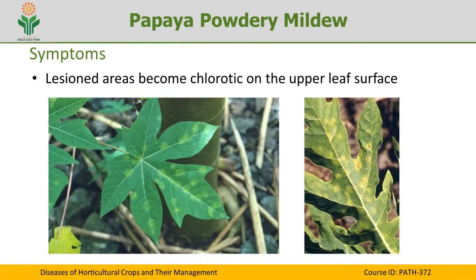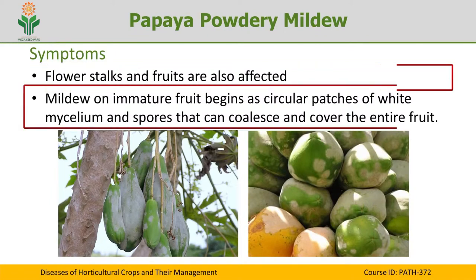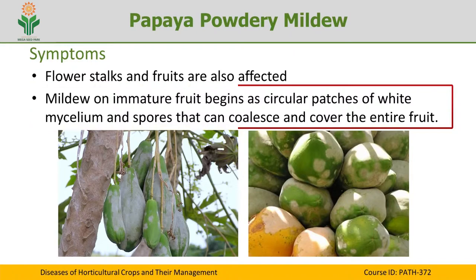As the powdery growth increases it leads to necrosis of the leaf and thereby premature defoliation. Powdery growth can also be seen on flower stalks and fruits. On unripe fruits, the symptom appears as round or circular powdery growth initially on immature fruits, and gradually under high humid conditions these powdery lesions grow over the entire surface of the fruit. If the fruit is completely encircled by the powdery growth, deformation of the fruit occurs, rendering it unmarketable — it may be edible but has little or no market value.